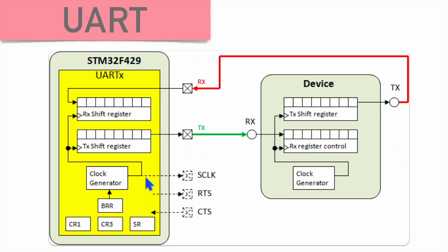In UART communication there are three major sections. First, clock generation to produce the required baud rate. Second, the transmit section, which contains a shift register that sends bits one by one over the transmit line. Third, the receive section, where received serial data is filled into a shift register. So the three main components are: clock generation, data transmission, and data reception.